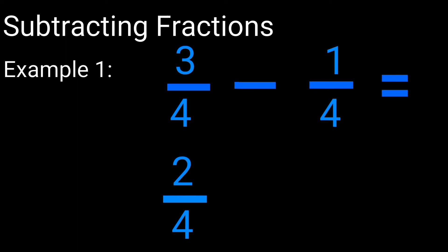2 over 4 is the answer here but it's not yet correct because it's not in the simplest form. So we have to go ahead and divide 2 over 4 by 2. 2 divided by 2 is going to give you 1, while 4 divided by 2 is going to give you 2. So the correct answer here is going to be 1 over 2. This is pretty simple because the denominators are the same numbers.